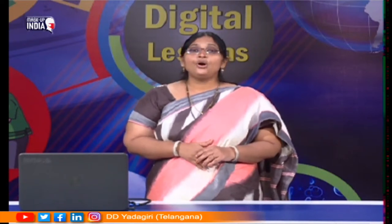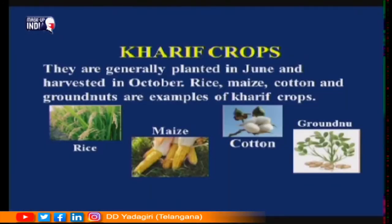Depending upon the seasons, we grow different types of crops. Crops that grow in the rainy season are called Kharif crops. They are planted in June and harvested in October. Examples are rice, maize, cotton, and groundnuts.